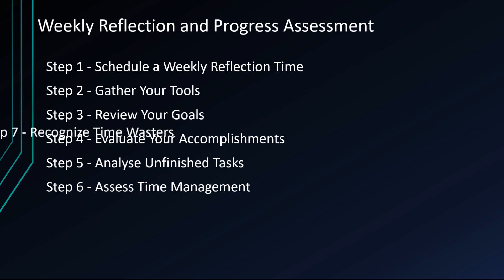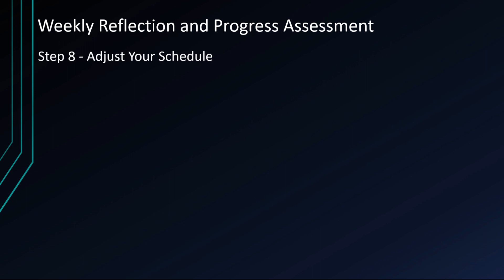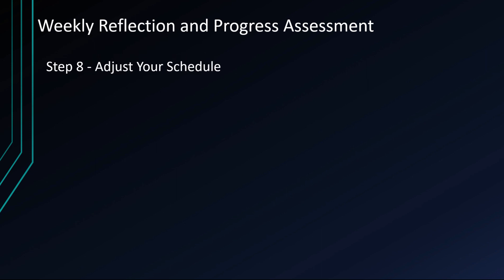Step 7: Recognize time wasters. Identify any time-wasting activities or habits that hindered your productivity during the week. Awareness of these issues is the first step to addressing them. Step 8: Adjust your schedule. Based on your reflections, make adjustments to your schedule for the upcoming week. Prioritize tasks, allocate time for important activities, and set realistic expectations.